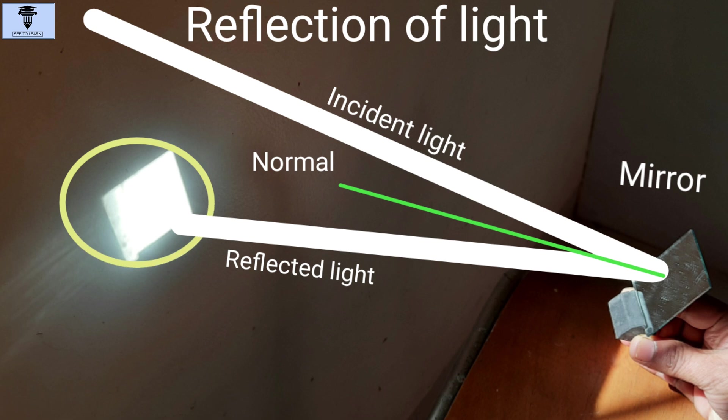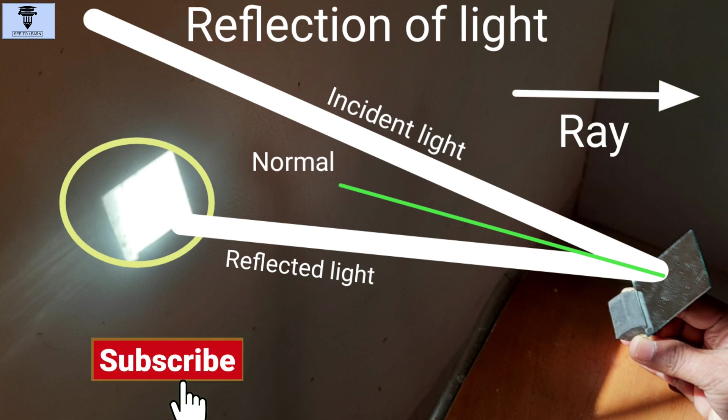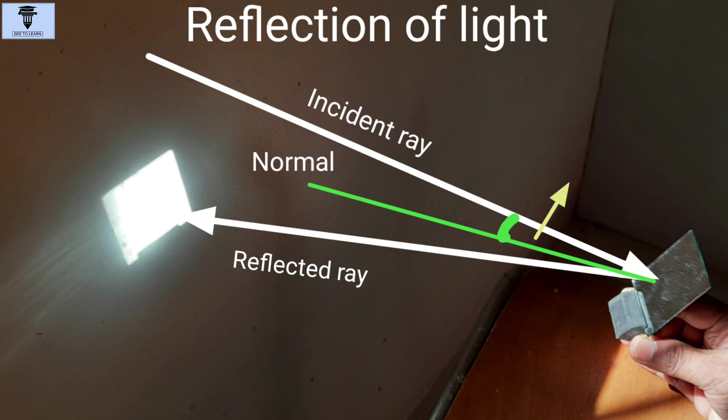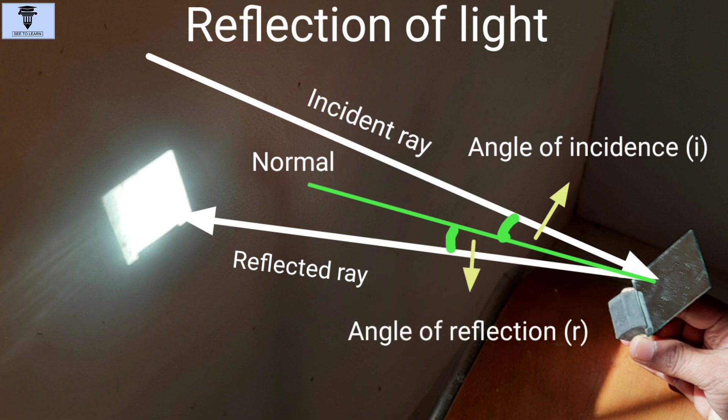Now, since light travels along a straight line, we use the concept of ray from mathematics to show the path of light. So, this is how we show the incident ray and the reflected ray. The angle between the incident ray and the normal is called the angle of incidence. While the angle between the reflected ray and the normal is called the angle of reflection.